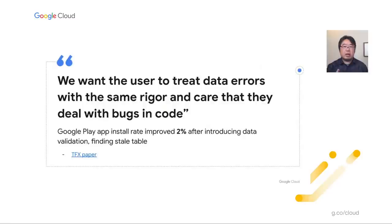Drift is skew for time series data. At the time of launch, your serving infrastructure may be working well, but over time your feature distribution could change from green bananas to yellow bananas, or maybe brown bananas, silently degrading the performance of your application. At Google, this is a very important practice: we want users to treat data errors with the same rigor and care that they deal with bugs in code.